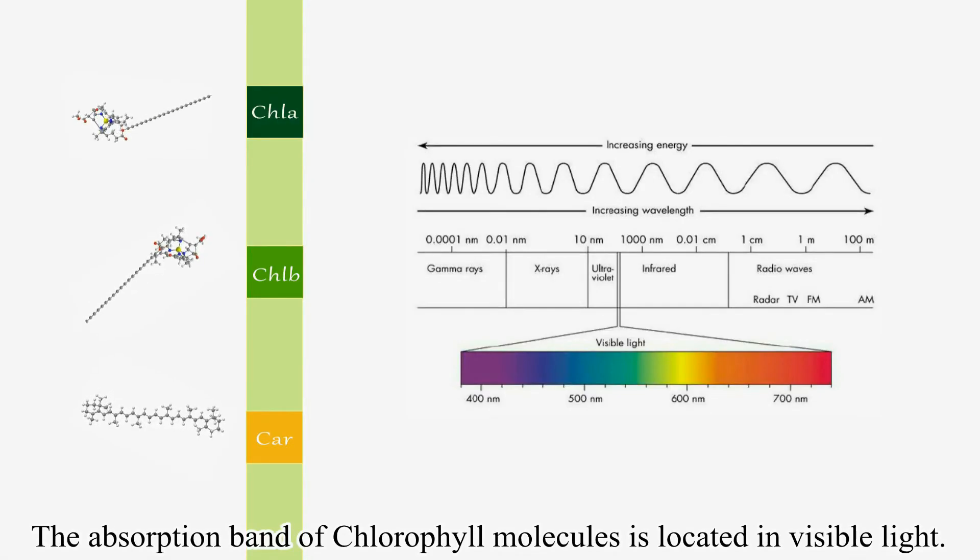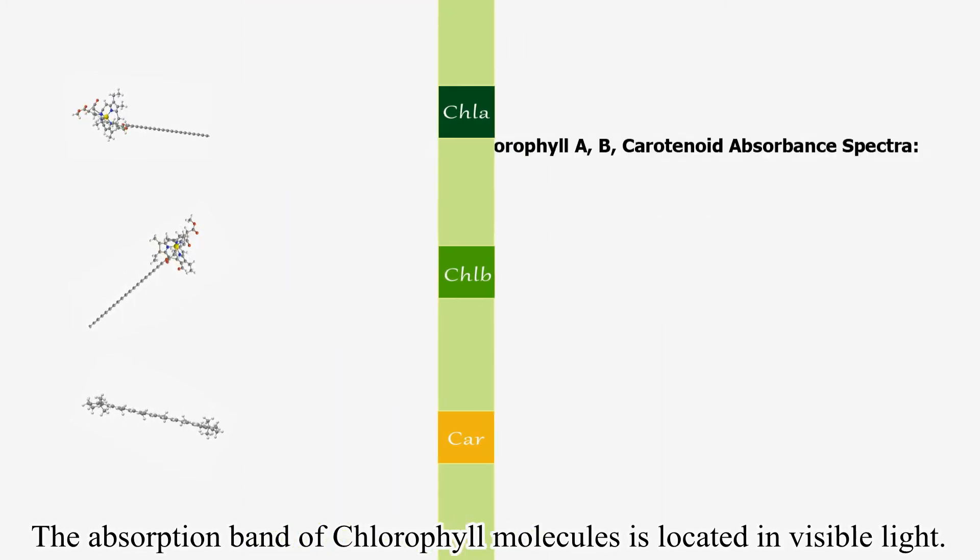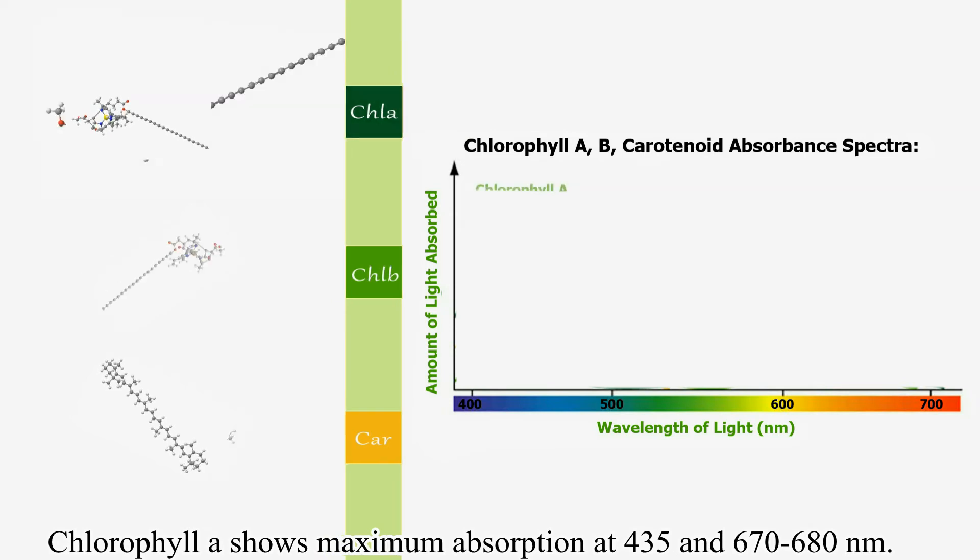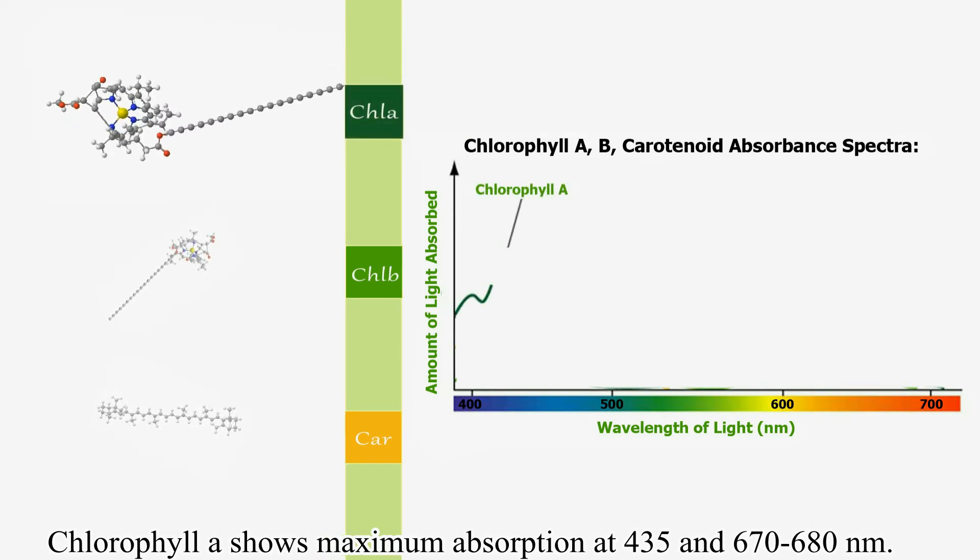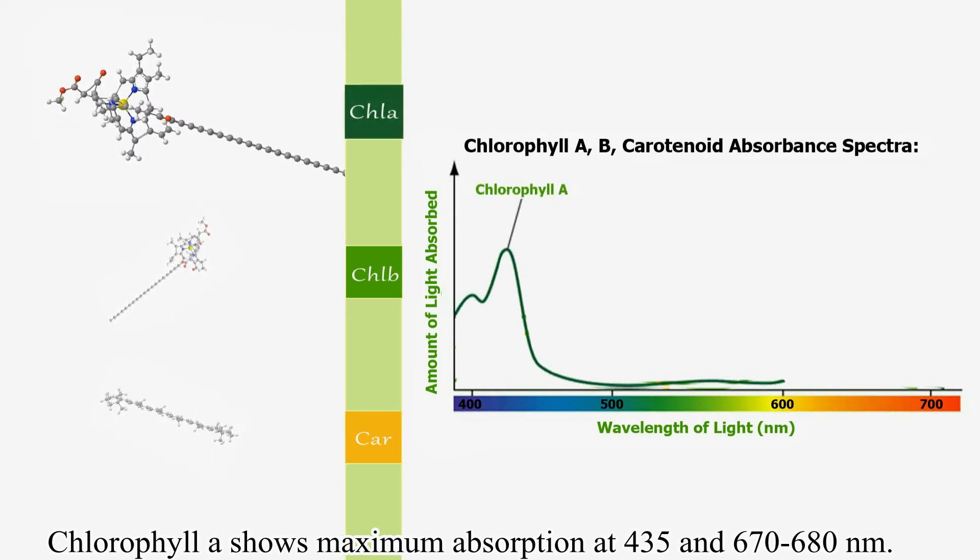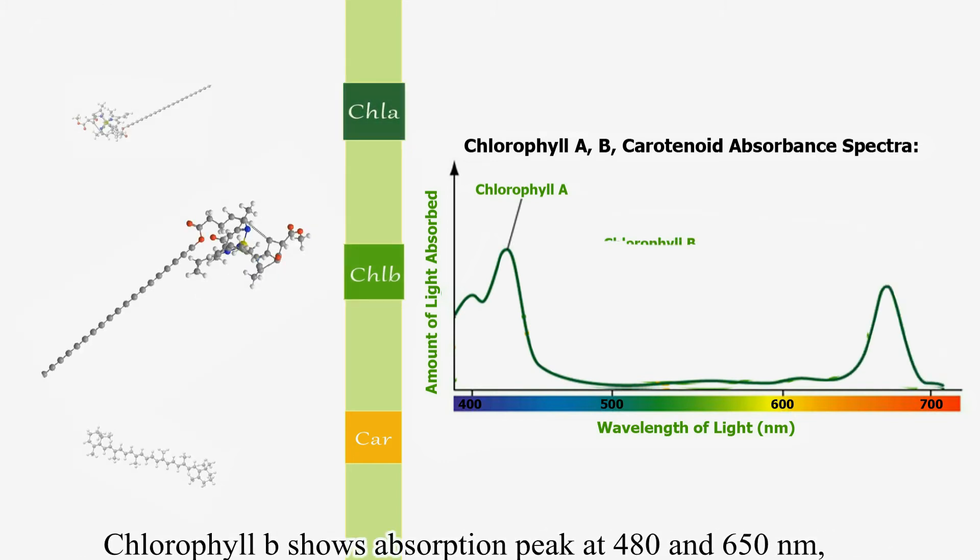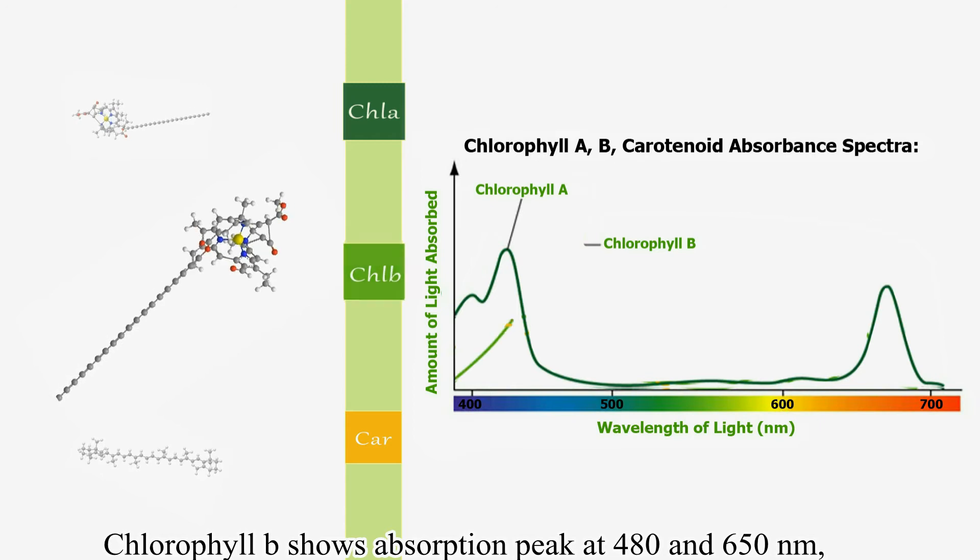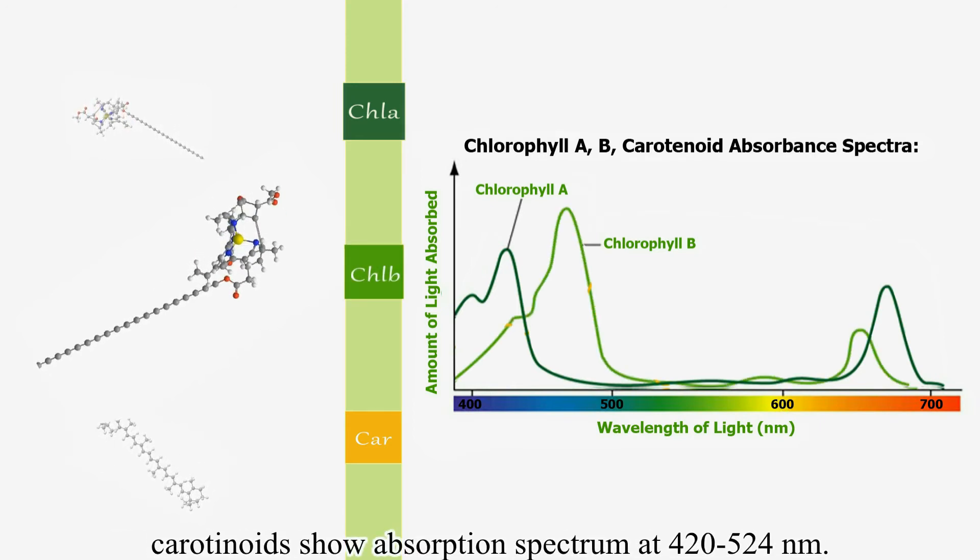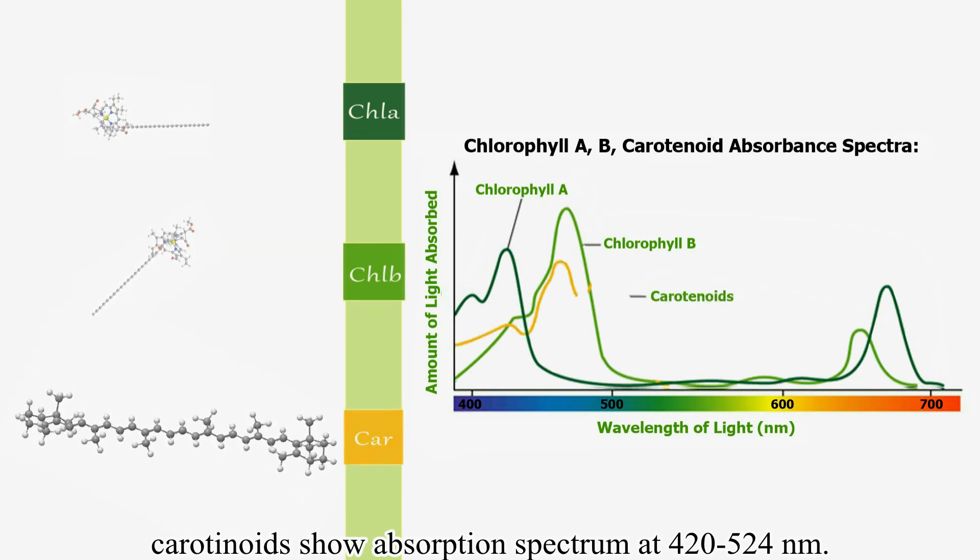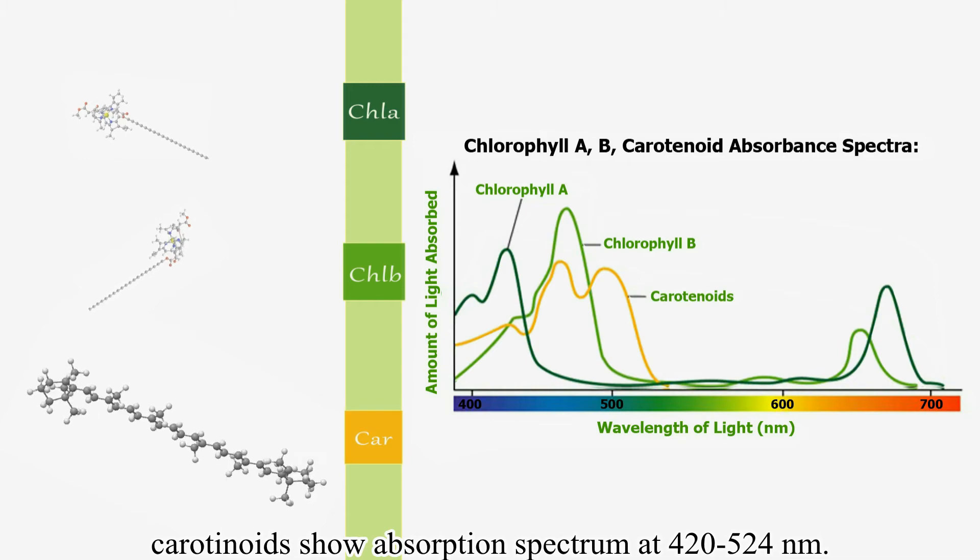The absorption band of chlorophyll molecules is located in visible light. Chlorophyll A shows maximum absorption at 435 and 670 to 680 nm. Chlorophyll B shows absorption peak at 480 and 650 nm. Carotenoids show absorption spectra at 420 to 524 nm.